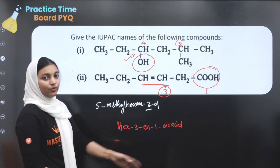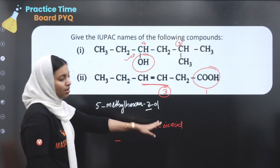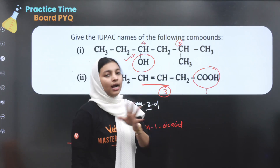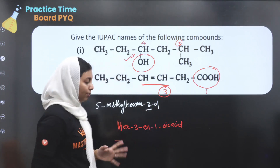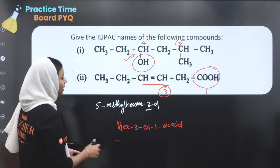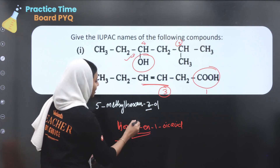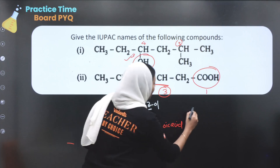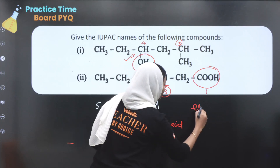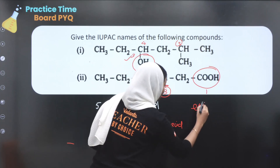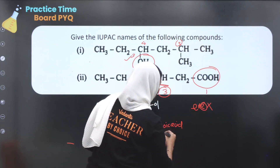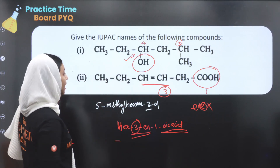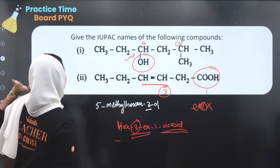Otherwise, you can avoid this 1-en-1. This is the third carbon compound, then we will take a look at HX, 3-en-1-oic acid. So we will take a look at the third carbon compound and complete this as 1-en-1-oic acid.